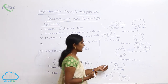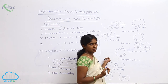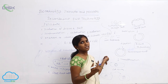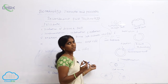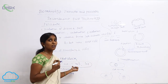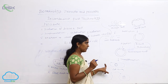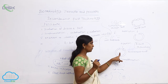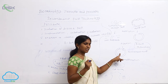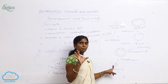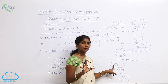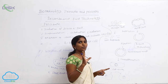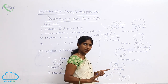For transformation in bacteria, the heat shock method is a very apt method. After transformation, the recombinant DNA is integrated into the bacterium or host cell, and there it goes for multiplication.